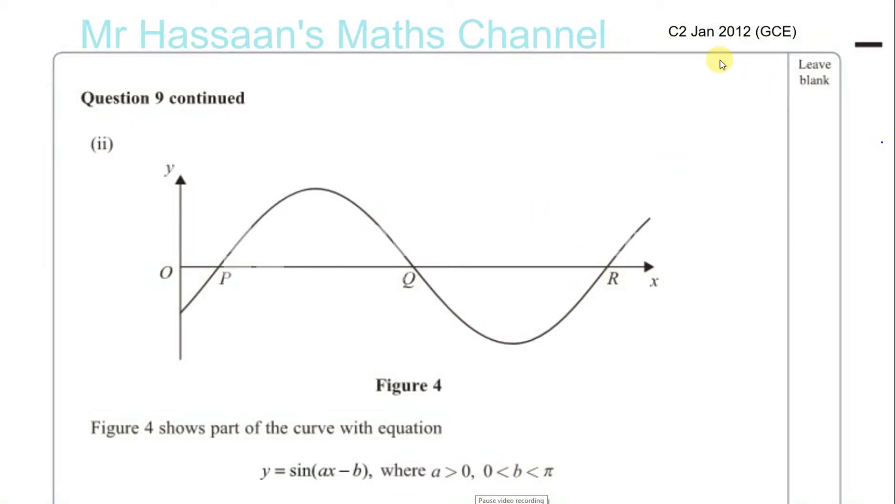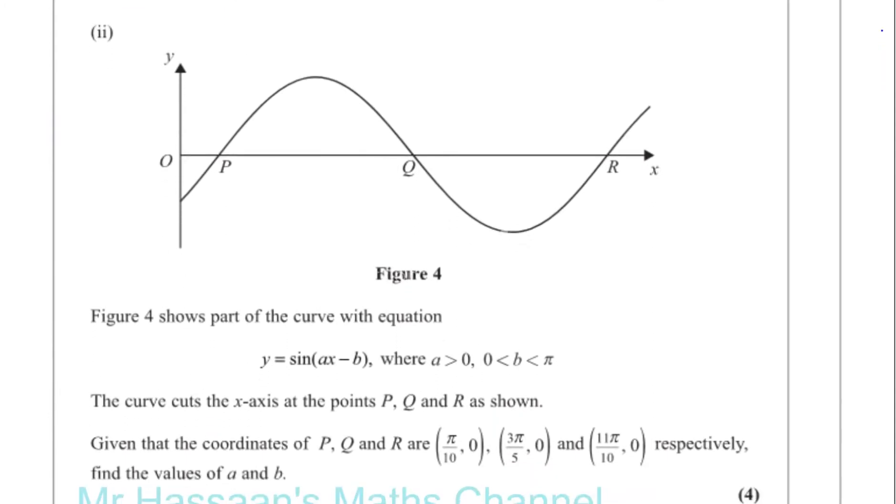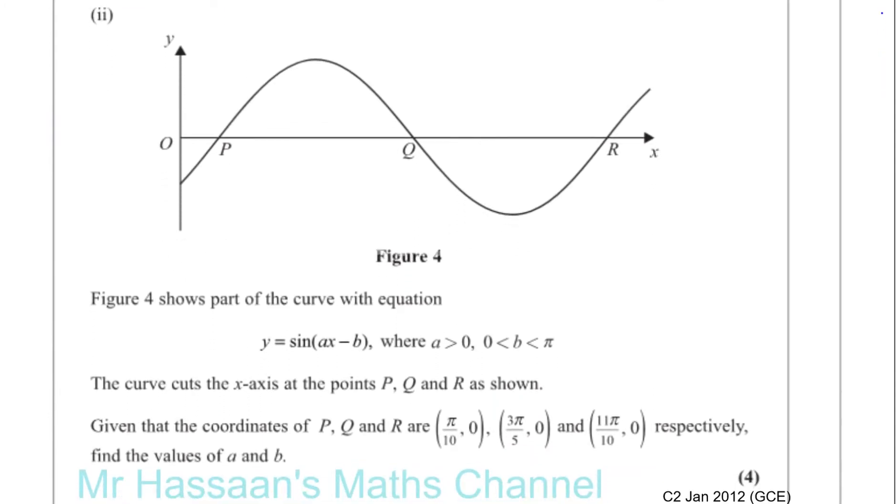Okay, question number 9 from C2 January 2012 GCE, a question about the sine curve. It says figure 4 shows the part of the curve with equation y = sin(Ax - B) where A is greater than 0 and B is between 0 and pi. The curve cuts the x-axis at the points P, Q and R as shown.